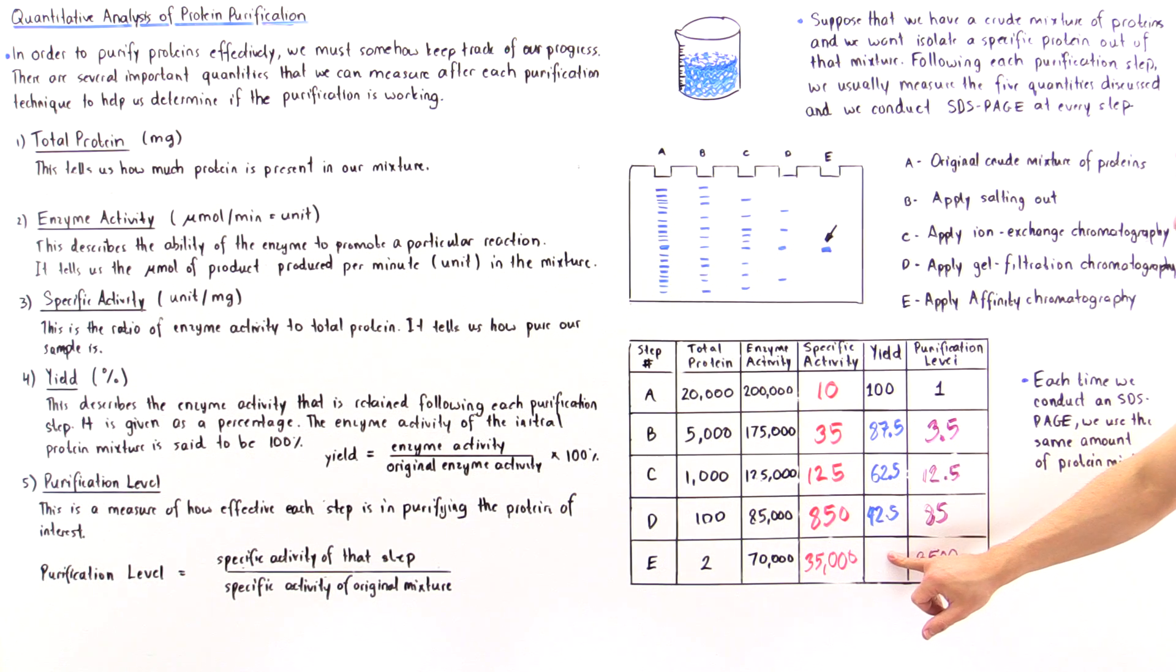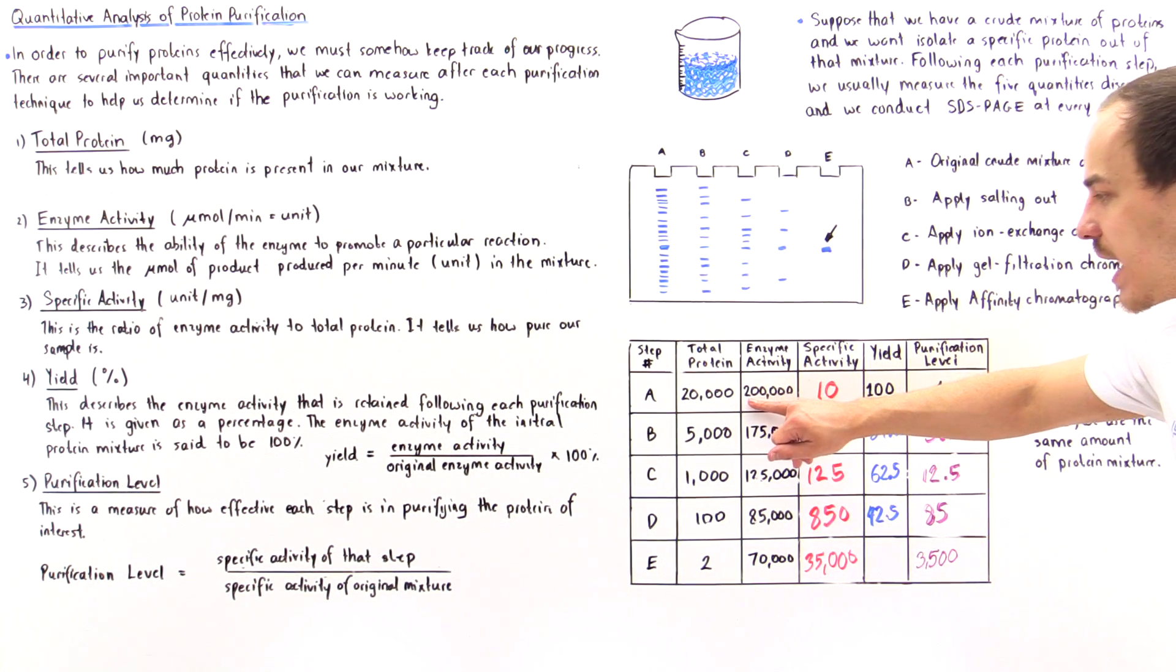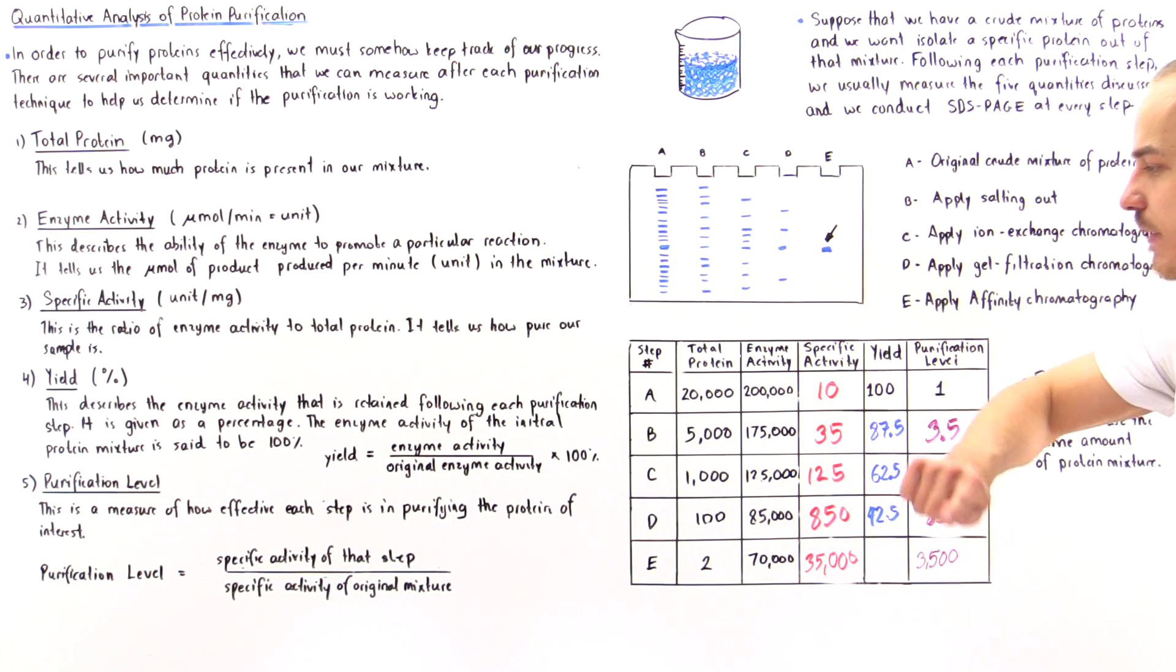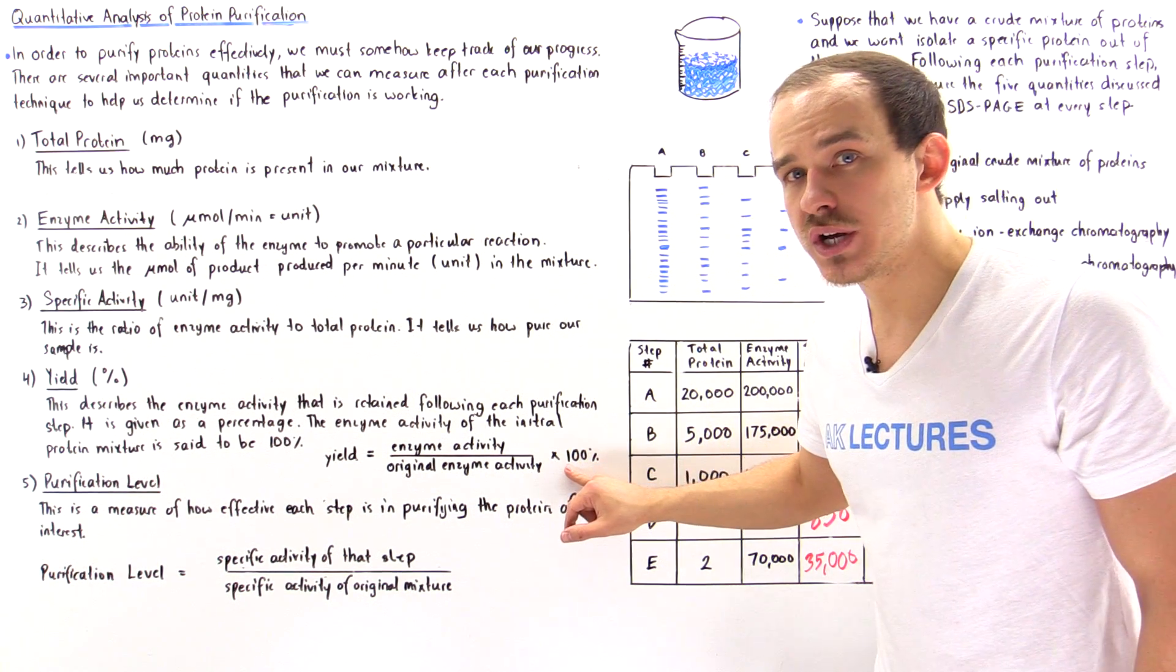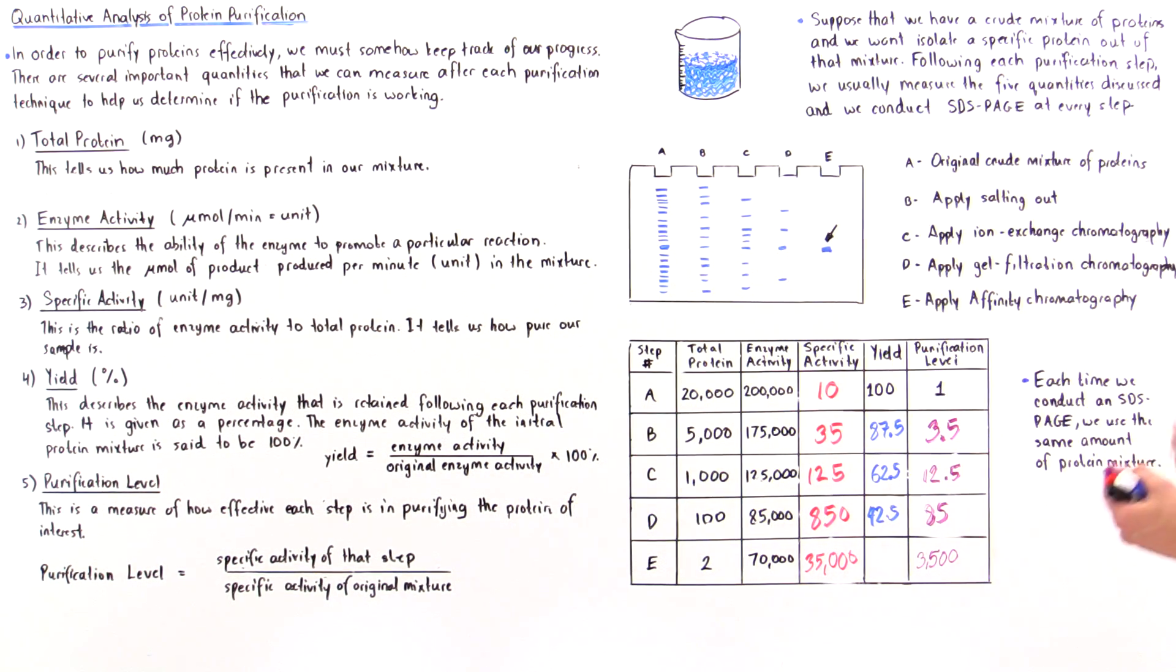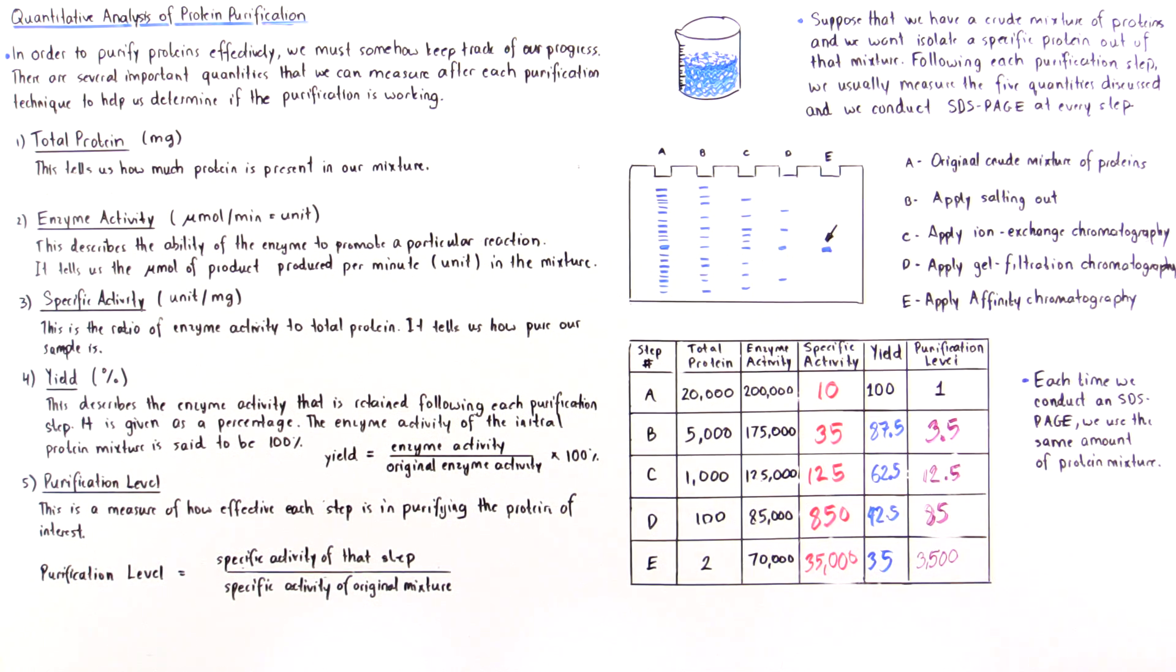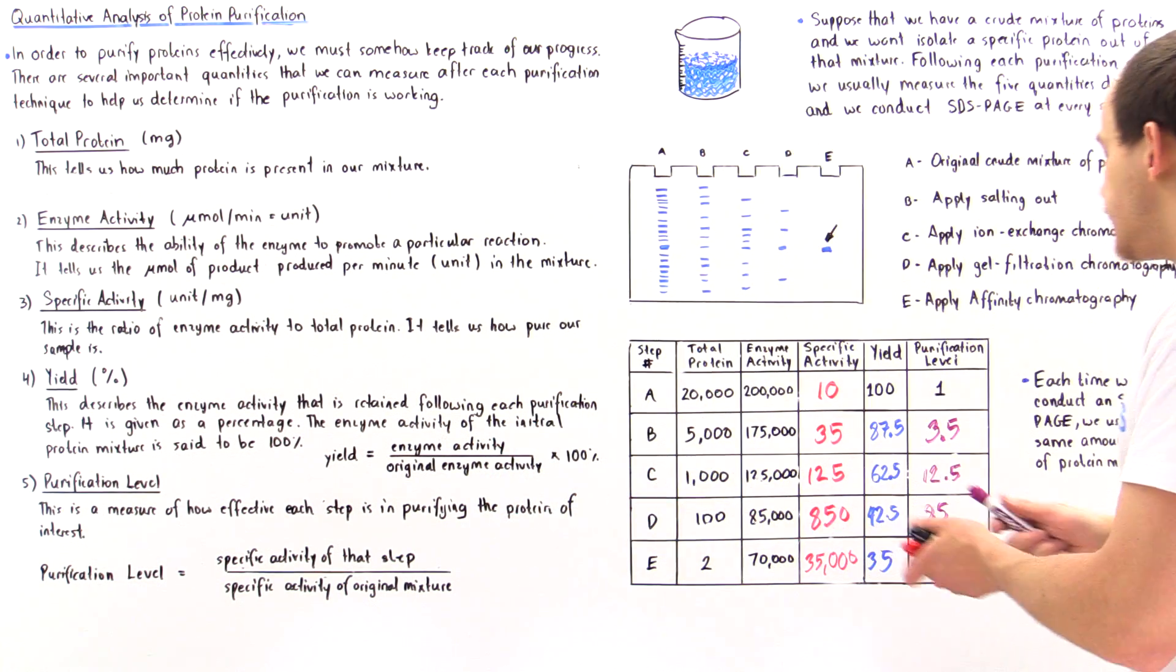For this set of procedures to be good, this yield has to be high enough. We take 70,000 divided by 200,000, that gives us 70 divided by 200 or 35 divided by 100. We multiply that ratio by 100 and get 35%, which is a high enough yield.